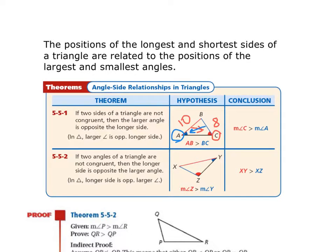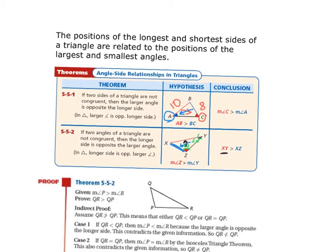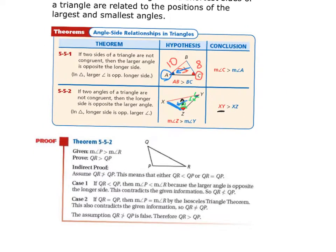Theorem 5-5-2 is the converse: if two angles of a triangle are not congruent, then the longer side is opposite the larger angle. So if angle Z is 100 degrees and angle Y is 50 degrees, the side opposite angle Z — which is XY — is larger than the side opposite the 50-degree angle, which is YZ. Larger side is opposite the larger angle, and vice versa.